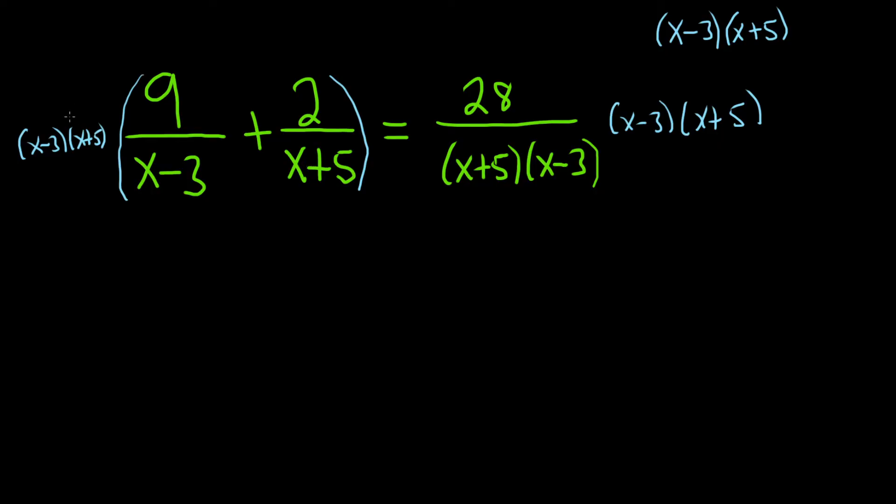Now let's go ahead and distribute. So we're going to take this and multiply it by each of these terms. I'm going to show all the steps. So it'll be x minus 3, x plus 5, times, and then 9 over x minus 3.